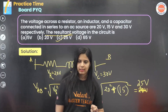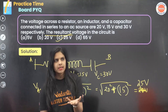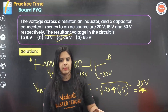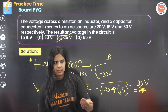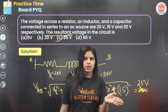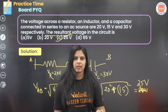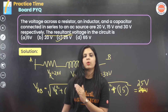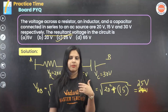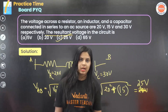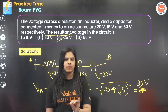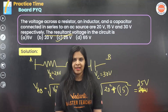We also need to look at transformer-related questions — finding the current in the primary coil, the secondary voltage, and the current in the output. These are important ideal transformer and LCR circuit questions to review.